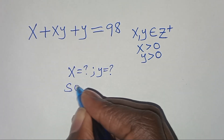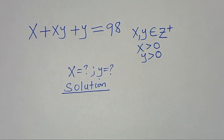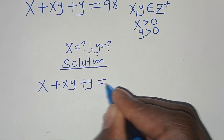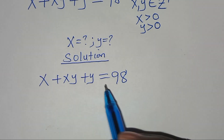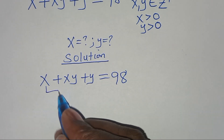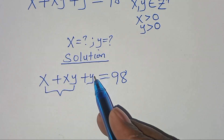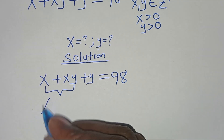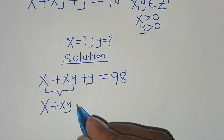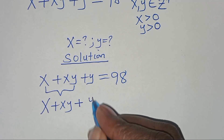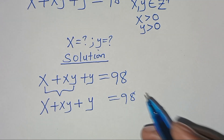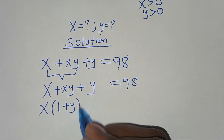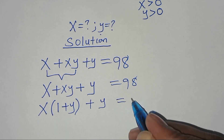So let's present a solution here. We have x plus xy plus y, this is equal to 98. We can see that x is common in the first part, but we also have only y. So how do we manipulate this so that we can factor out? We have x plus xy plus y, this is equal to 98. Since x is common, we can factor out x, so that we have x times (1 plus y) plus y, this is equal to 98.